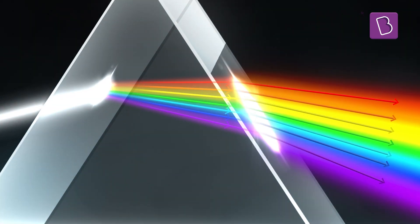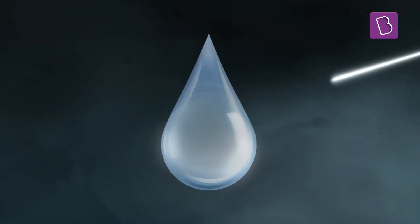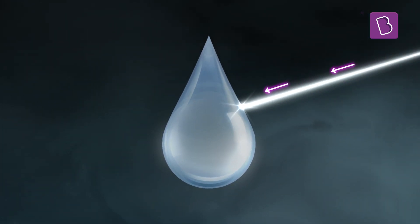And nature has its very own prisms. Yes, when it rains, water droplets get suspended in the atmosphere, and sunlight traveling through air falls on these water droplets.